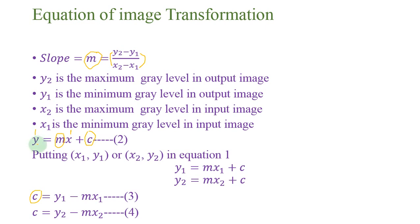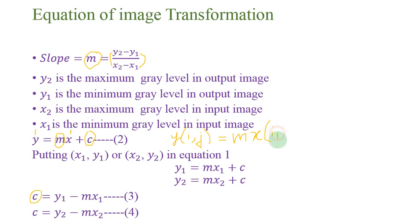For example, the output pixel y at location i-th row and j-th column equals m multiplied by the pixel in the input image at location i,j plus the value of c calculated previously. We will now perform this in MATLAB so that you will better understand this process.